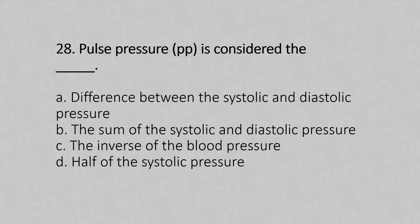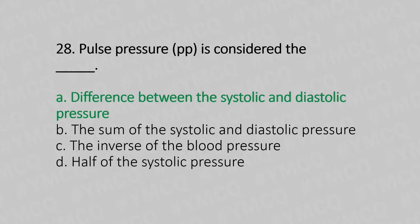Question 28: Pulse pressure (PP) is considered the — Option A: difference between systolic and diastolic pressure. Option B: sum of the systolic and diastolic pressure. Option C: the inverse of the blood pressure. Option D: half of the systolic pressure. The answer is Option A: difference between systolic and diastolic pressure.